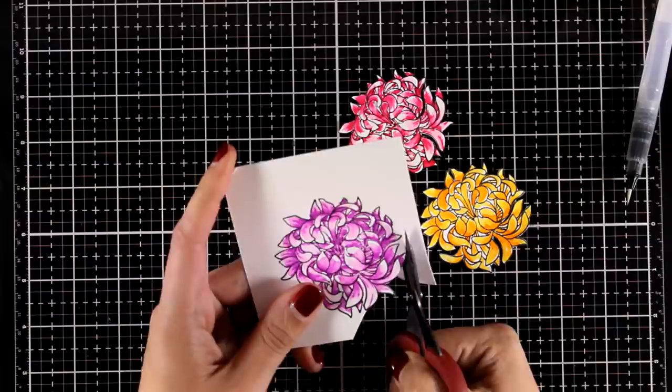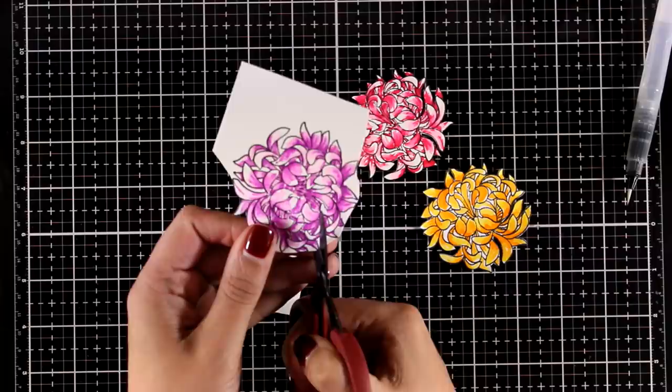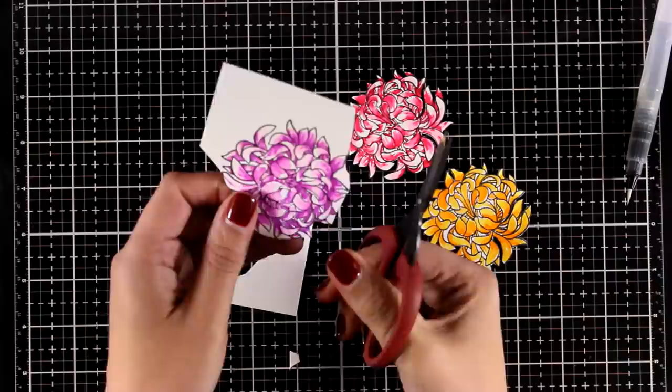You can also use the matching die to cut them out but you will end up with a white border all around them. I didn't want to have that sticker look for my art journal today so I decided to do it the hard way and I'm going all around the petals with my scissors.